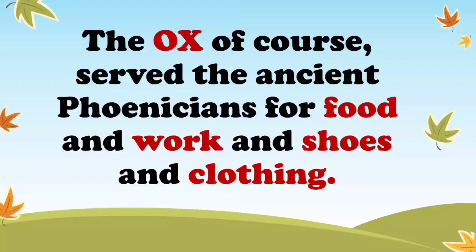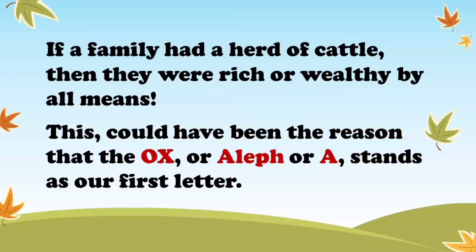Aleph, or the ox, served the ancient Phoenicians for food, and work, and shoes, and clothing. So, if a family had a herd of cattle, then they were rich or wealthy by all means. This could have been the reason that the ox, or Aleph, or A, stands as our first letter.